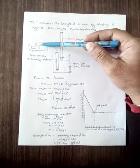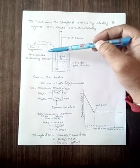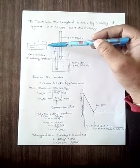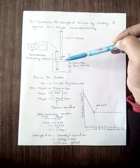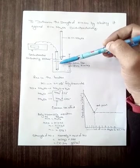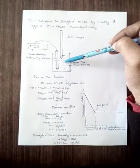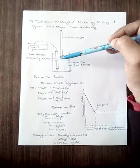This conductivity electrode is connected to the conductometer. When we place the electrode into the beaker, it shows us the exact conductance of the solution in the beaker.